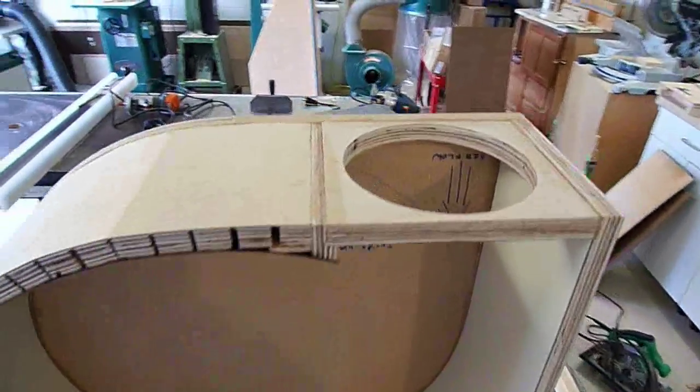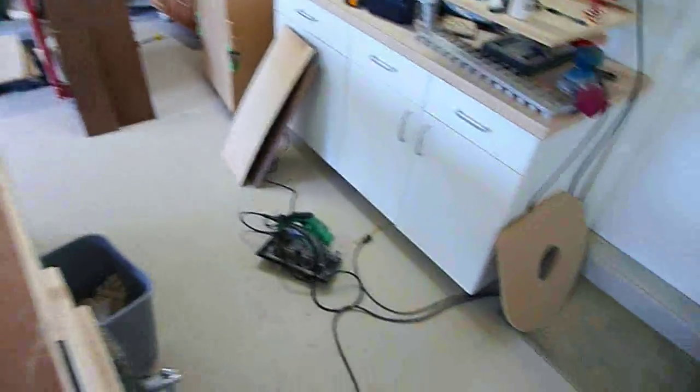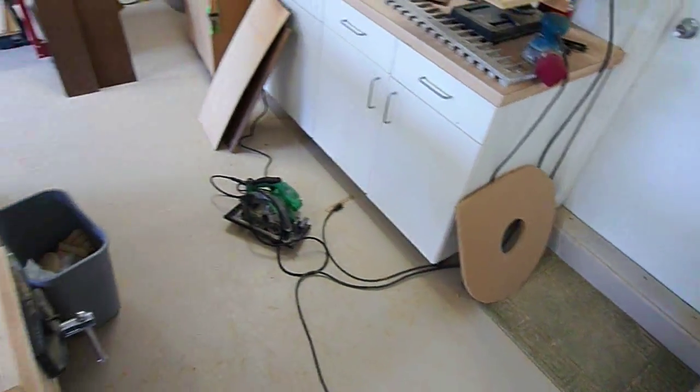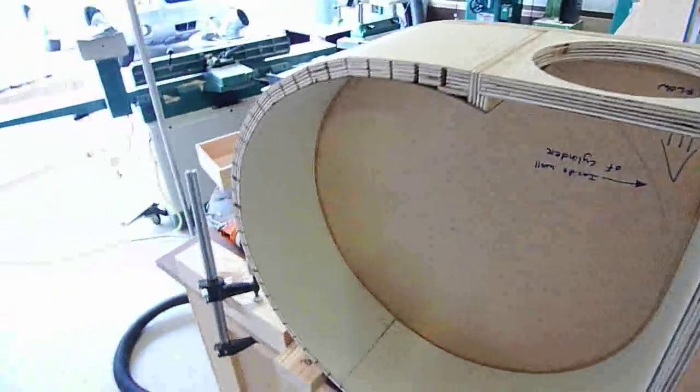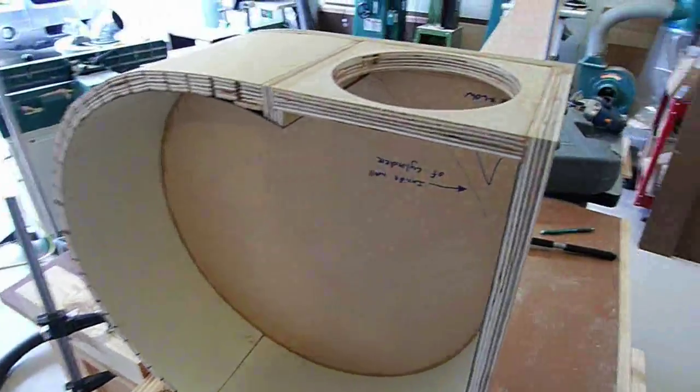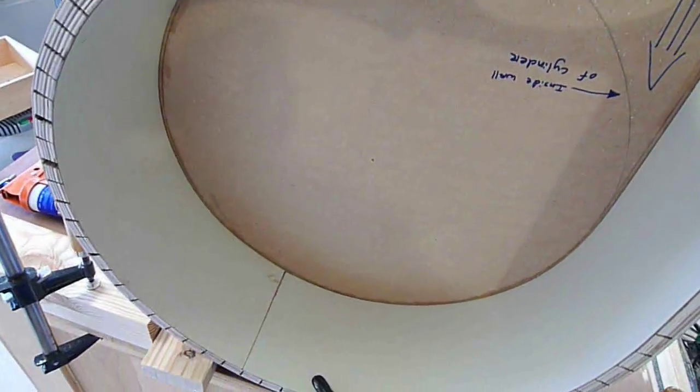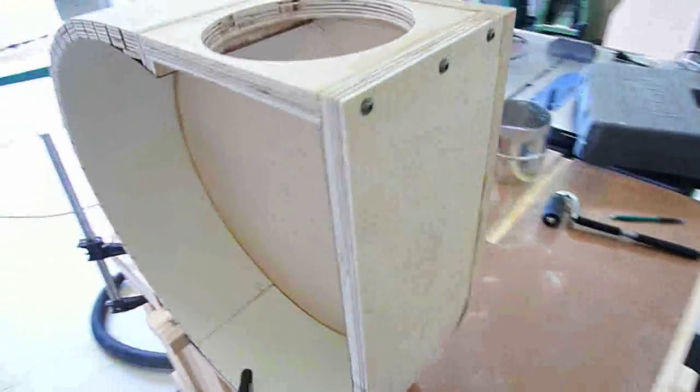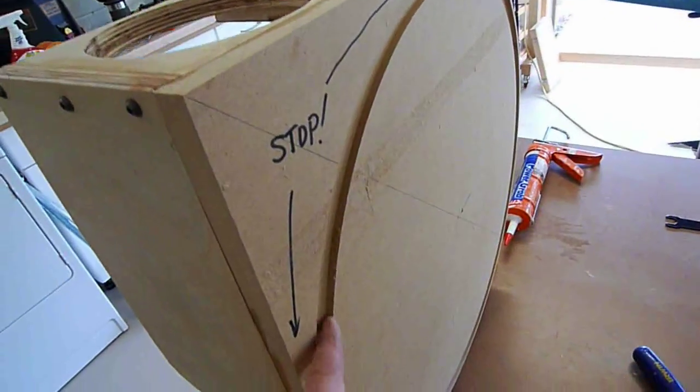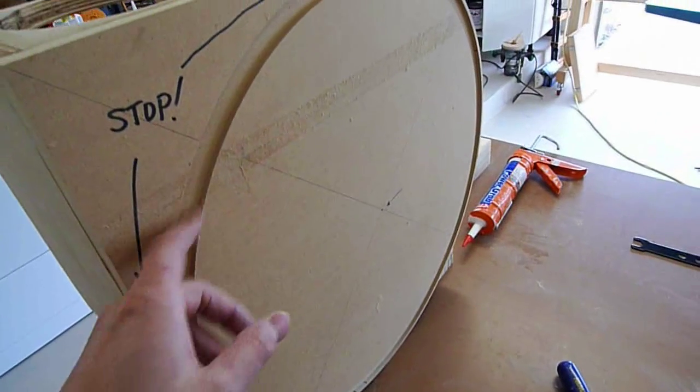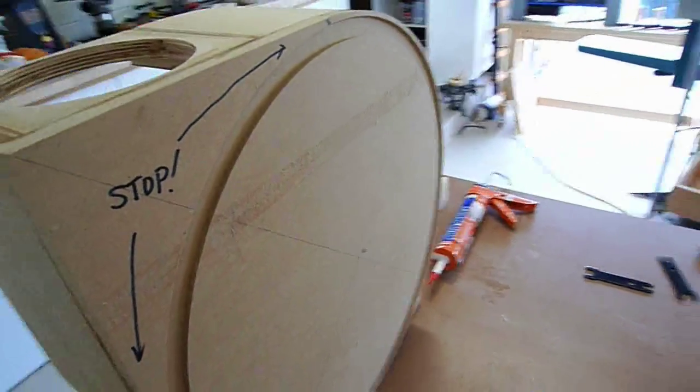Alright, so now we got this routed out here, and we got the center part routed out over there, which is what we use as a template. And we're pretty much on to final assembly now. We're just going to glue in our fittings here and on the other one, and that's pretty much it. The only thing that we have left to do is once we get it down out of the clamps here, we're going to come back and finish up the cutouts here for where the dust is going to fly down.